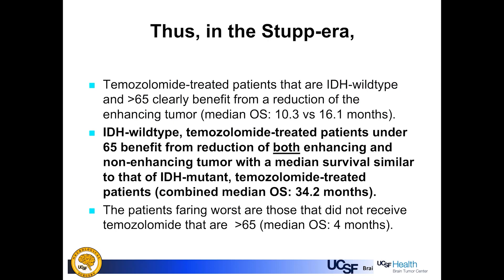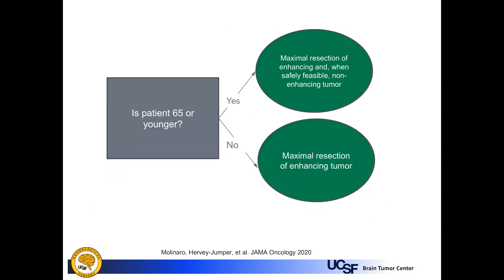Patients faring worst are those who did not receive temozolomide and are over age 65. To simplify: for patients older than 65, the goal of extended resection is really the enhancing tumor. For patients younger than 65, the goal of extended resection, if feasible, can encompass both enhancing and non-enhancing tumor.